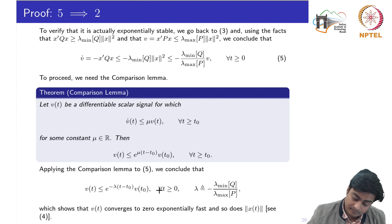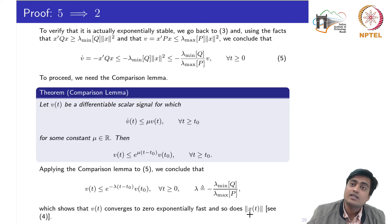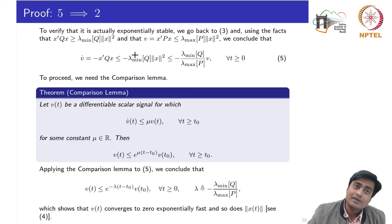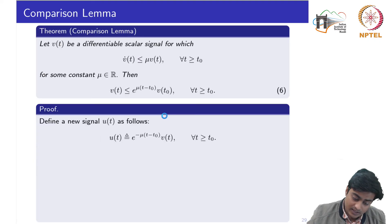We can see that v(t) ≤ e^{μ(t−t₀)} · v(t₀), which is exactly the definition of an exponentially stable system, showing that v(t) converges to 0 exponentially fast. Since x(t) is bounded and v is expressed in terms of x, if v is exponentially stable then x must also be exponentially stable.